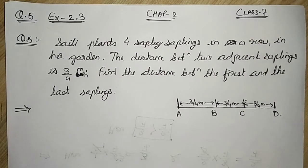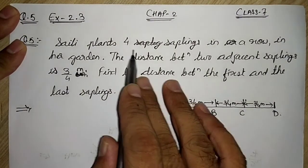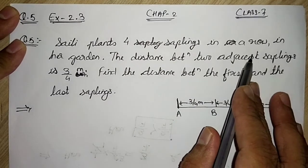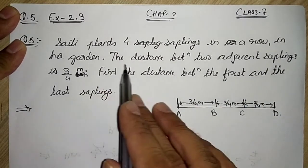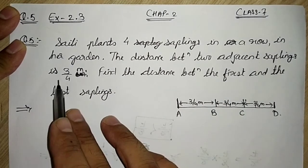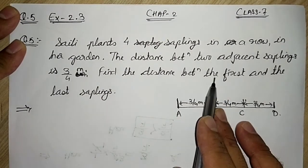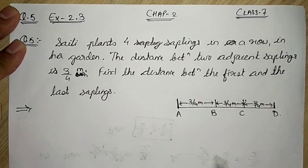Question number 5 says, Saili plants four saplings in a row in her garden. The distance between two adjacent saplings is 3 by 4 meter. Find the distance between the first and the last sapling.